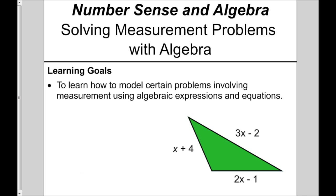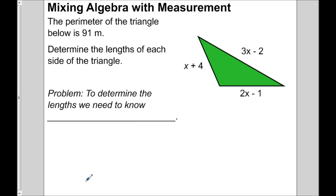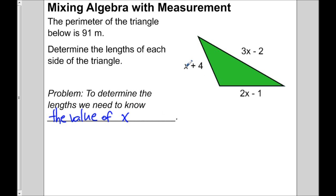So we're going to solve this problem. The perimeter of the triangle here is 91 meters, and we're going to determine the lengths of each side. In order to know what the side lengths are, we need to know the value of x. If we knew what x was, we could replace each of these x's, simplify each expression, and figure out what those lengths are. We need to figure out what x is.